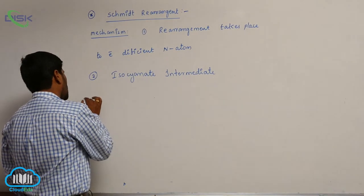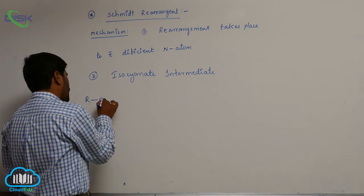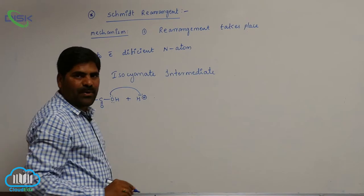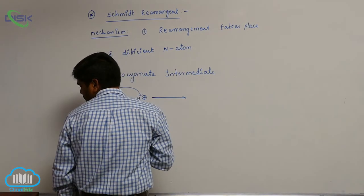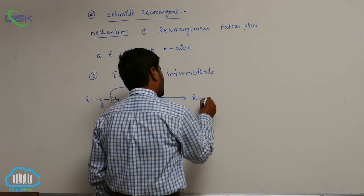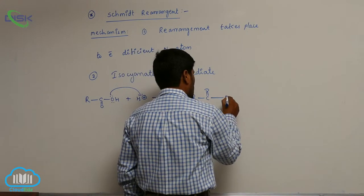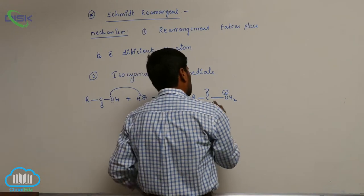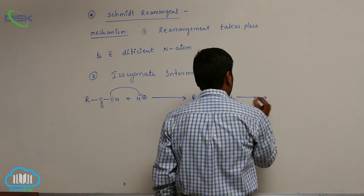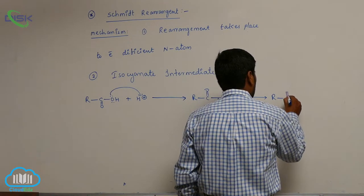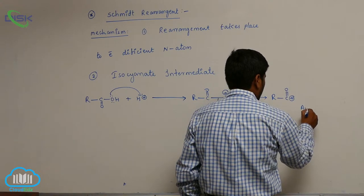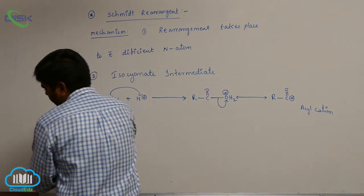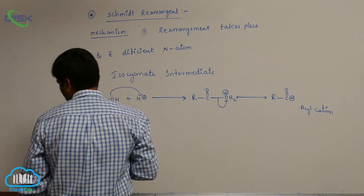First, R–C(=O)–OH: H⁺ is added, converting it into R–C(=O)⁺ carrying a positive charge. Then loss of water molecule takes place, forming an acyl cation, also called acyl carbocation. This acyl carbocation is stabilized due to resonance. This is the first step.